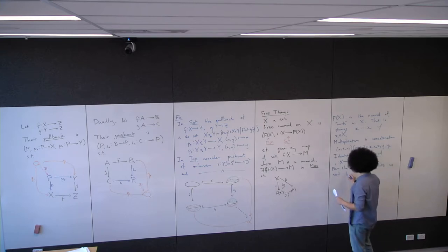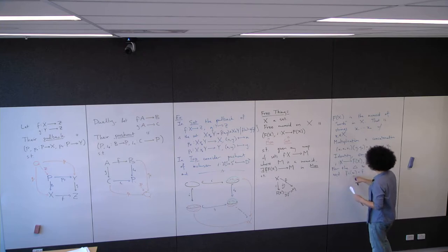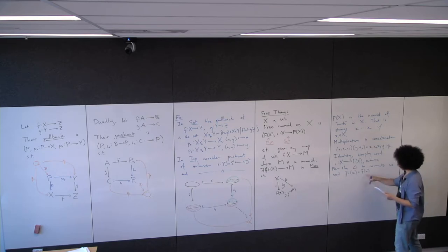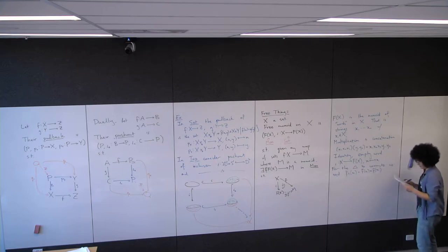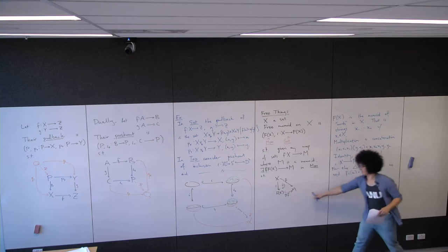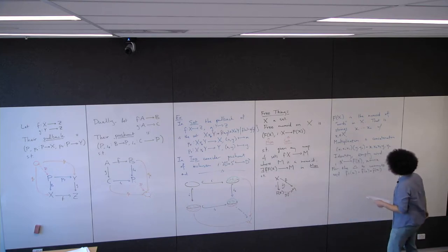For the triangle to commute, we need f̃(ι(x)) = f(x). Since ι just returns the single-element string, f̃ is determined on length-one strings. I've given an f, and I've said what f̃ has to be on a length-one string.